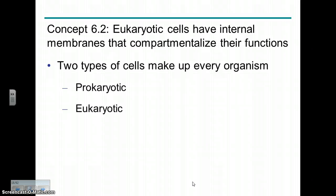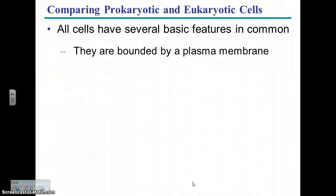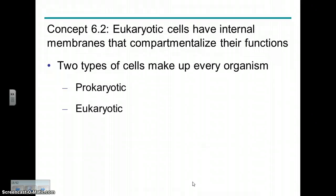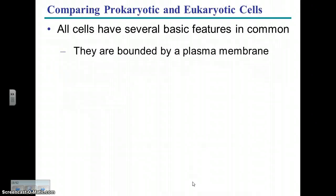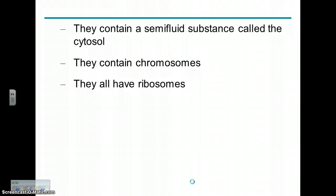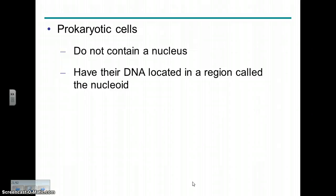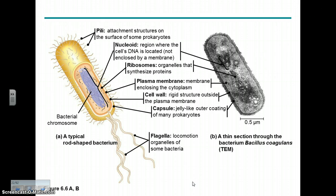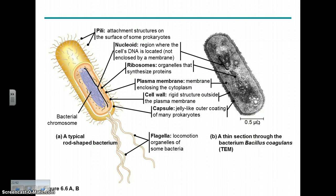Two types of cells: prokaryotes and eukaryotes. Prokaryotes are those relatively simple bacterial cells. Eukaryotes comprise everything else. All cells have a membrane, at least one chromosome, and ribosomes. Prokaryotes lack a nucleus — they have DNA, but it's not in a nucleus; it's in a region called the nucleoid. You can see the ribosomes as little dots, a cell membrane, and in many bacteria, a cell wall. These cells are very small, only about half a micron wide — a micron being one thousandth of a millimeter.